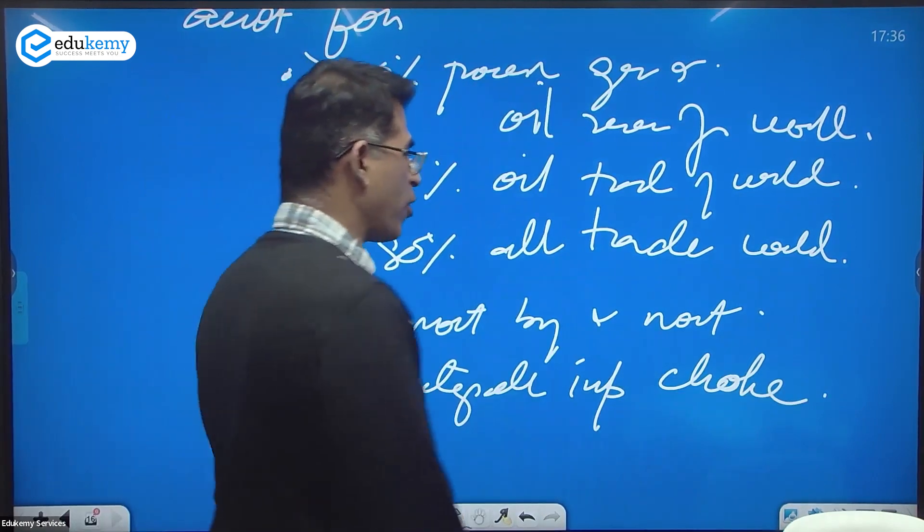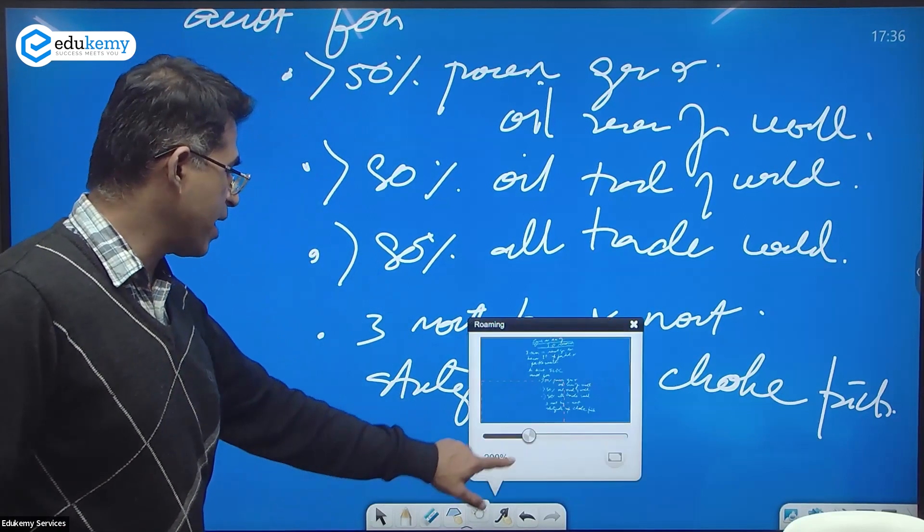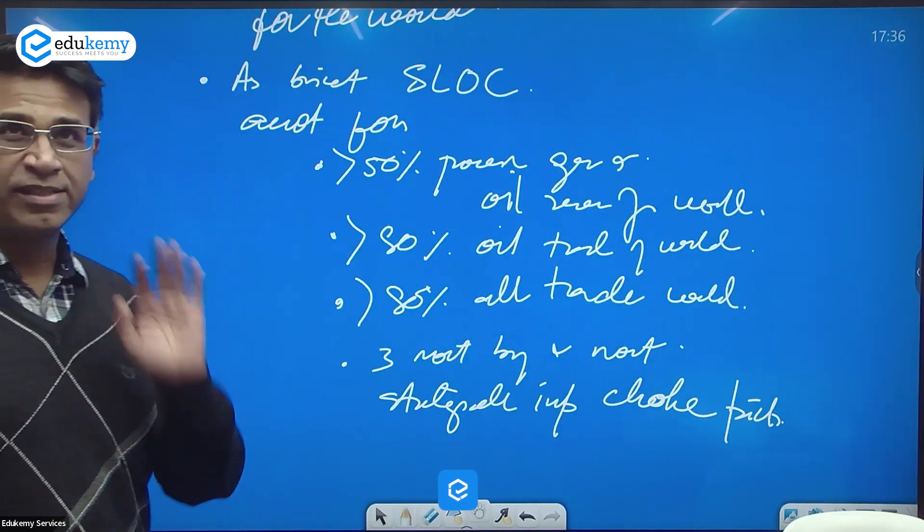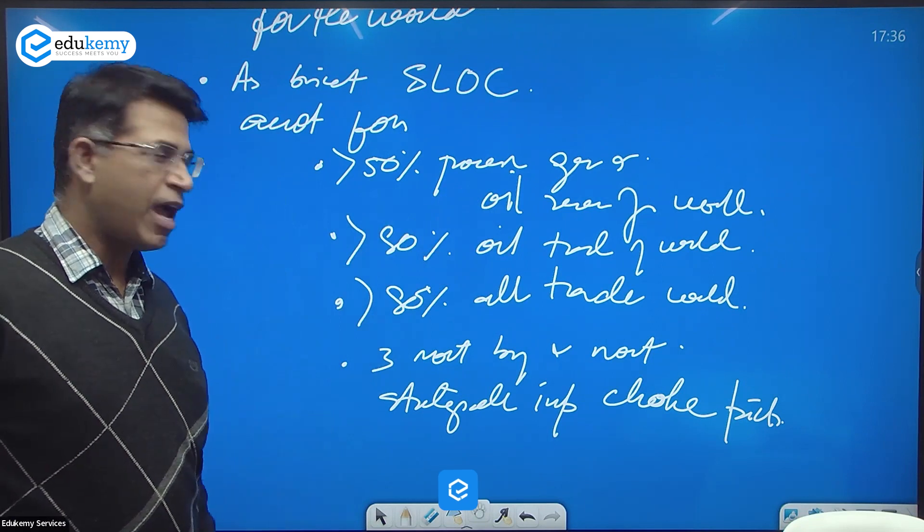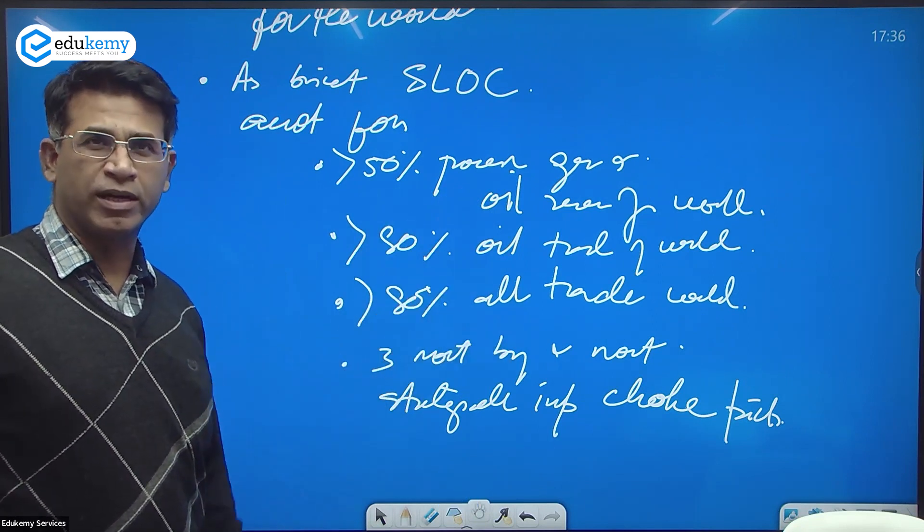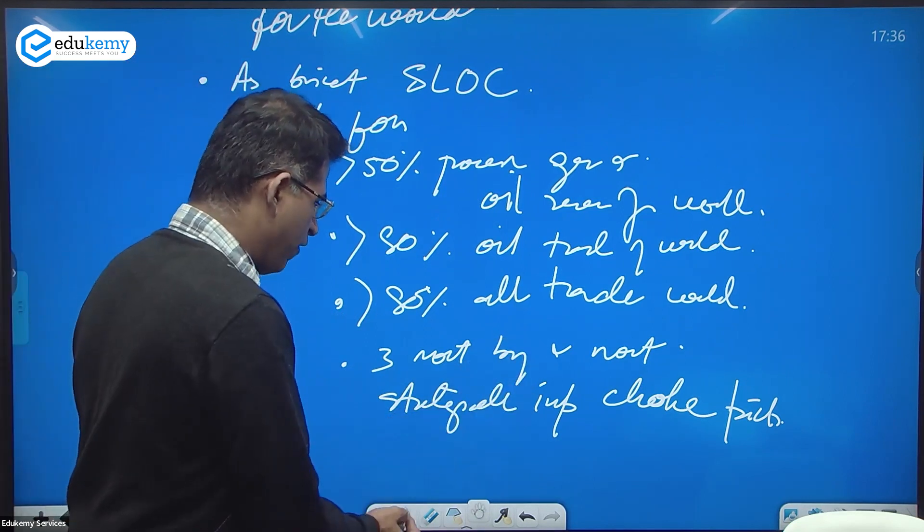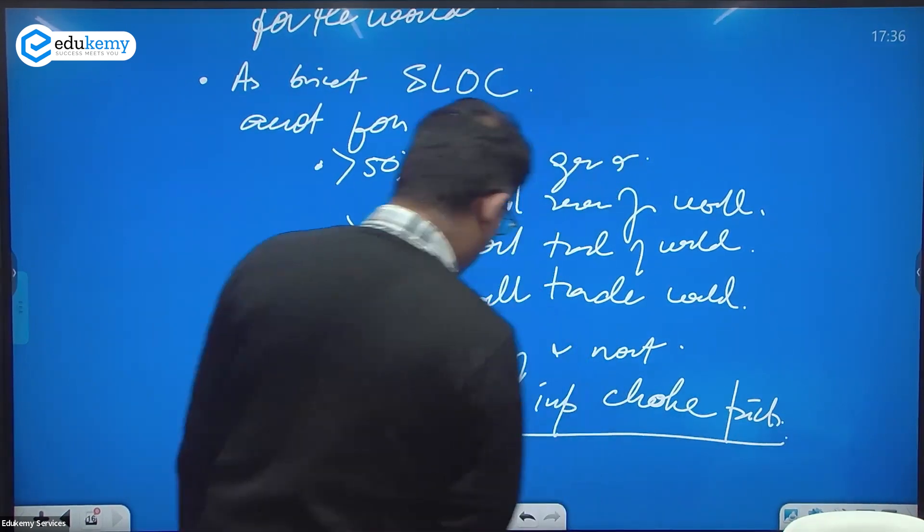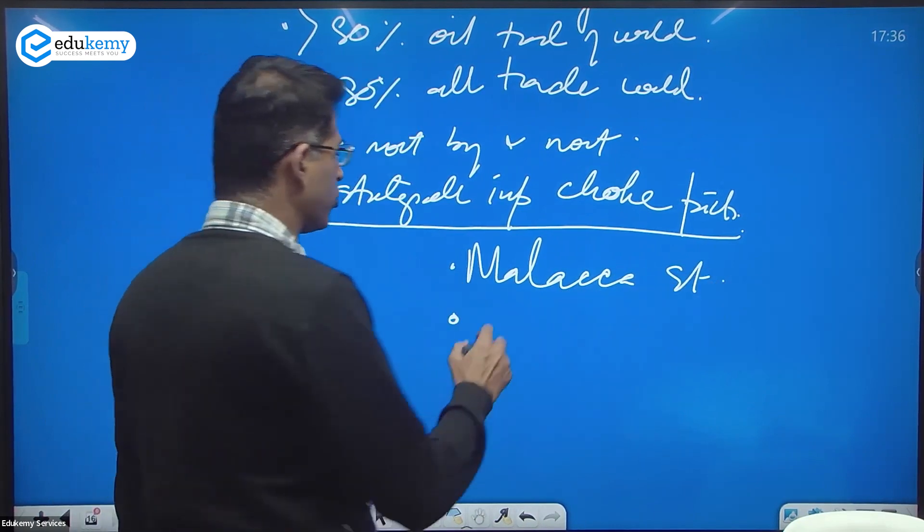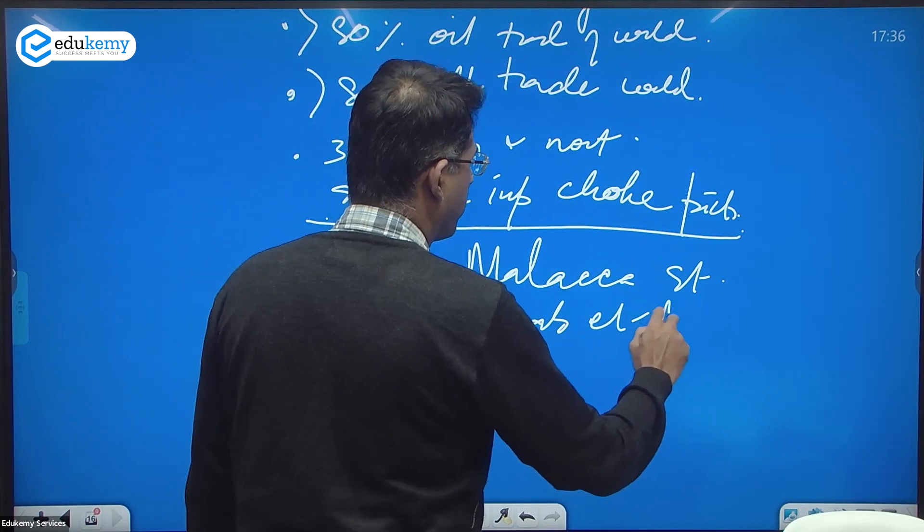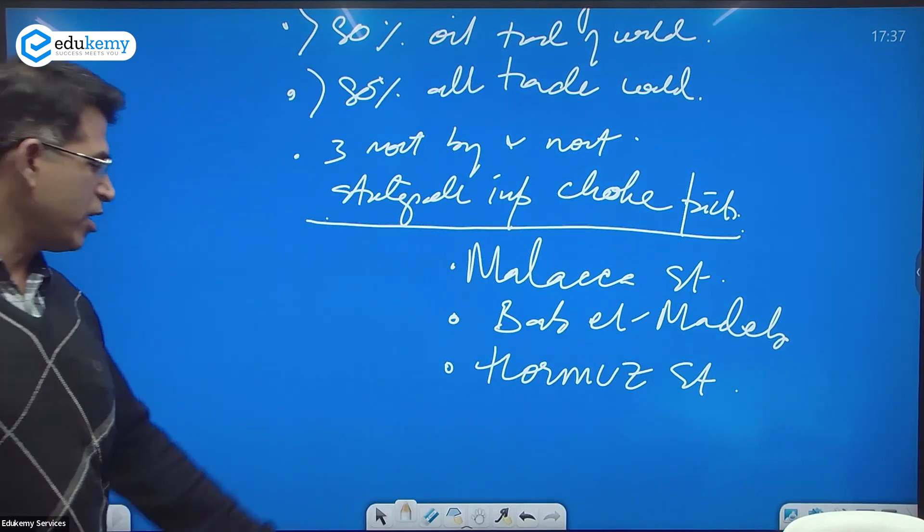It has the three most busy and most strategically important choke points. Choke points are where the passage narrows down. These include the Malacca Strait, the Bab el Mandab, and the Hormuz Strait.